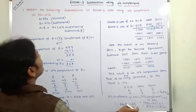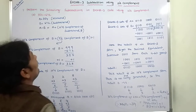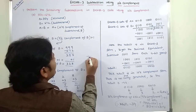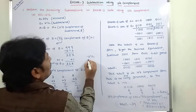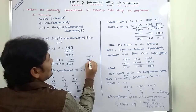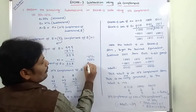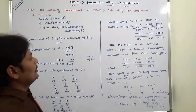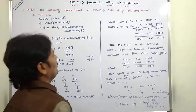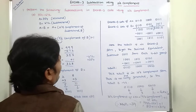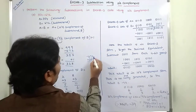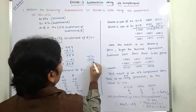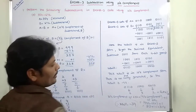Because there is no end-around carry generated, the result is negative. Therefore, the result is equal to minus 318. Now let's check whether this result is correct or not. That is: minus 672 plus 354.